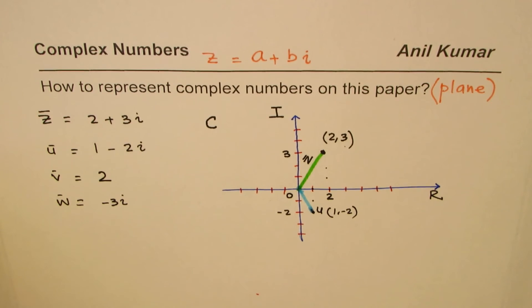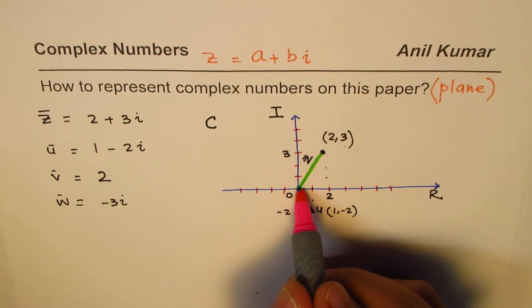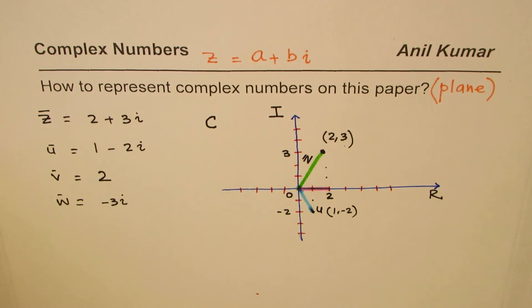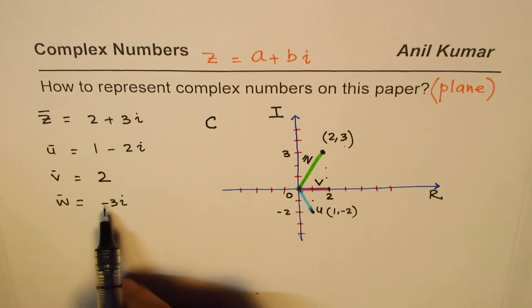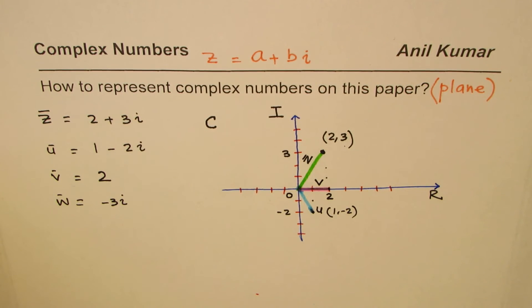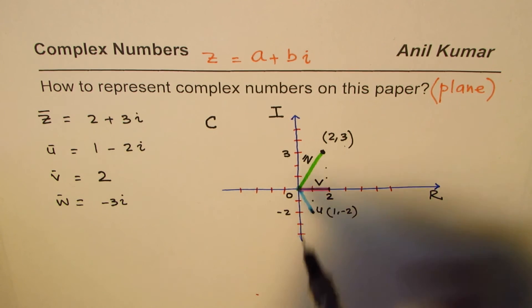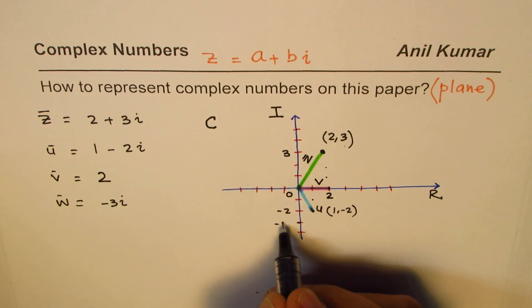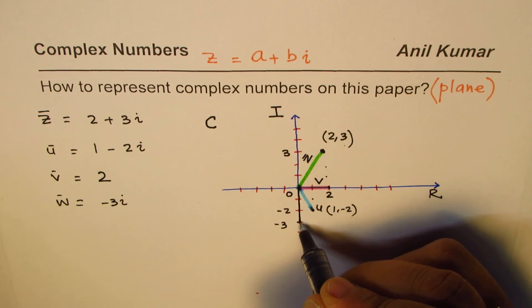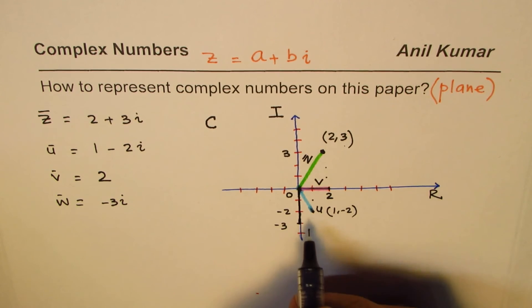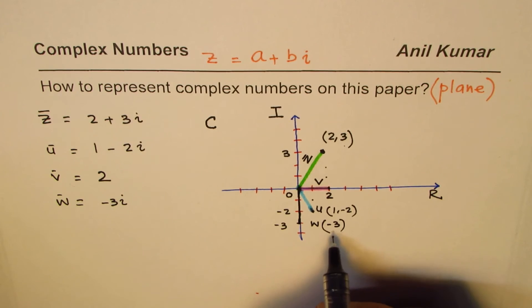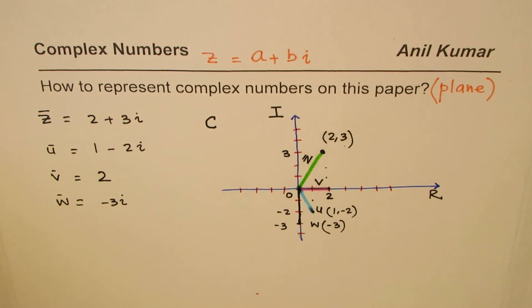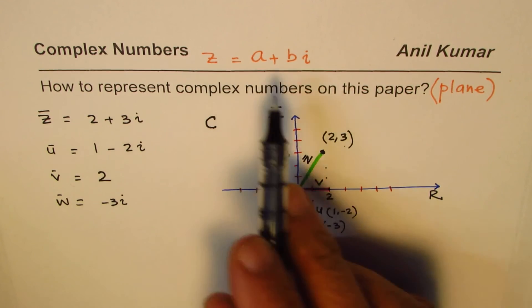Now v = 2 — it's just two units to the right along the real axis, so this line on the plane represents v. For w = -3i, there's no real part, so we go straight down: 1, 2, 3 units, giving us minus 3 on the imaginary axis. This line represents w. I'm not writing 'i' next to 3 because the y-axis already represents imaginary numbers.